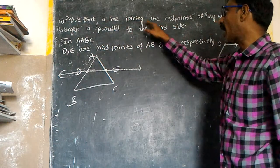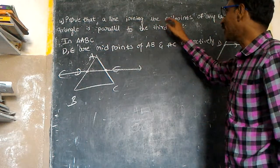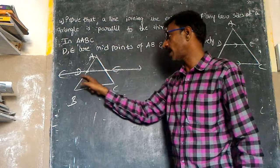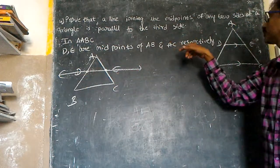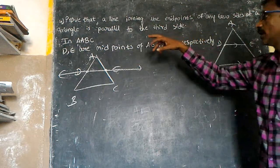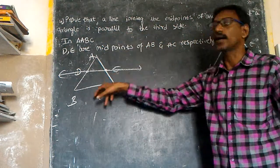Prove that a line joining the midpoints of any two sides of a triangle is parallel to the third side.